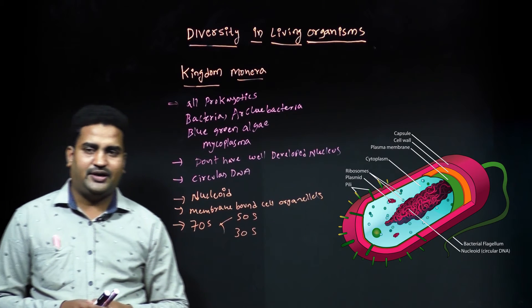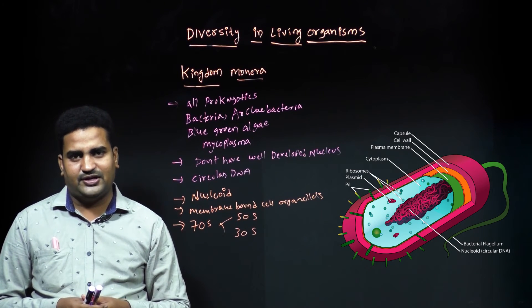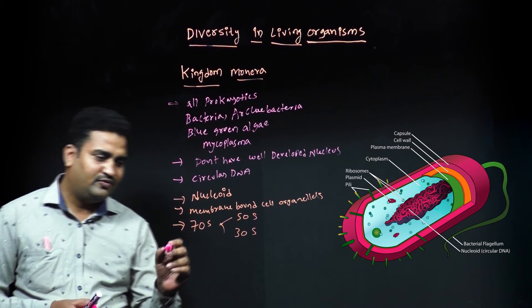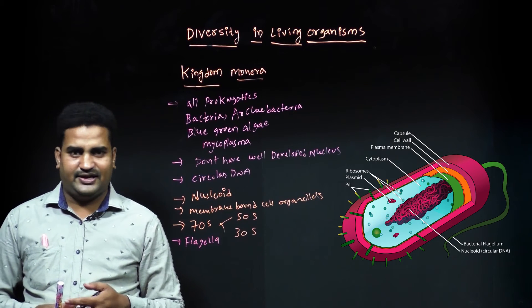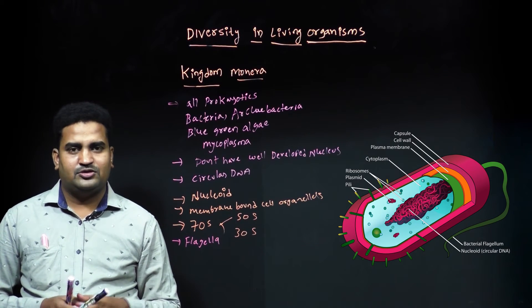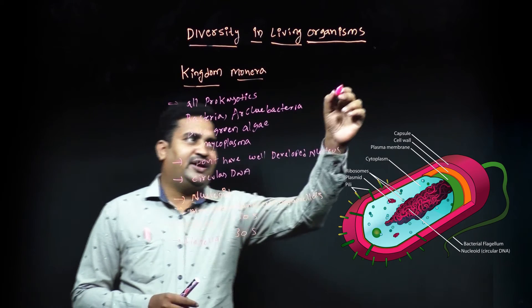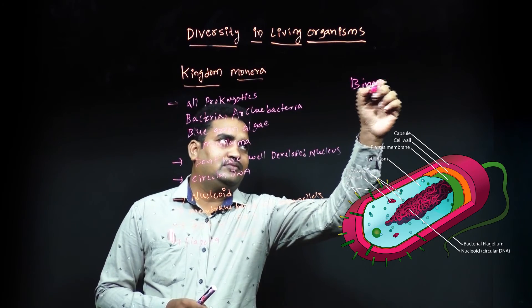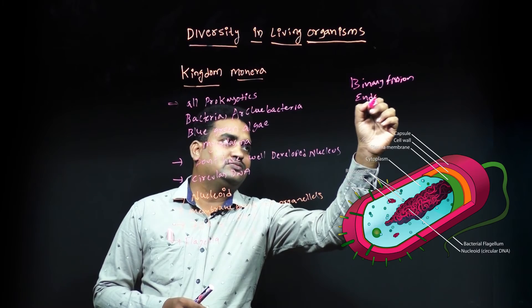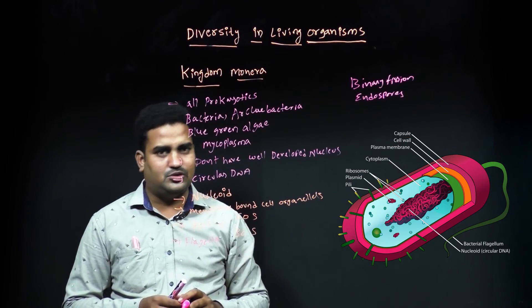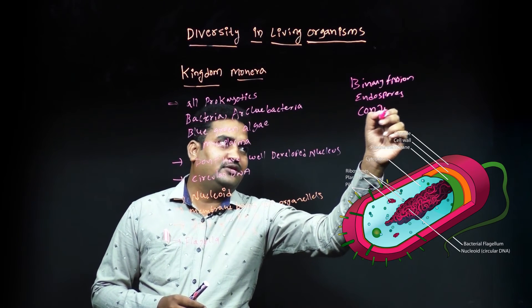Some prokaryotic organisms are motile, meaning they can move from one place to another using flagella. Some are non-flagellated and cannot move. Prokaryotic organisms usually divide by binary fission. Some organisms form endospores. Some prokaryotes also show sexual reproduction in the form of conjugation.